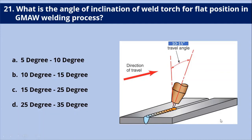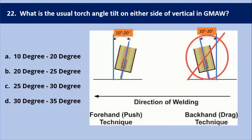Next question: what is the angle of inclination of a welding torch for a flat position in GMAW welding process? From the diagram, it is clear that the inclination of the torch from the flat portion in GMAW is around 10 to 15 degrees. So the answer is B: 10 to 15 degrees.